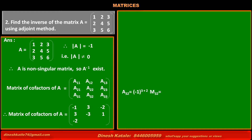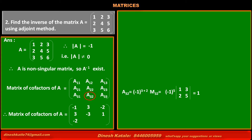Cofactor of element at third row, second column, A32 = (-1)^(3+2) × minor M32 = (-1)^5 × (1×5 - 2×3) = -1 × (5 - 6) = -1 × (-1) = +1. So the value of cofactor A32 is 1.